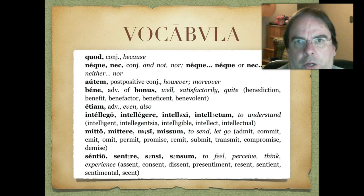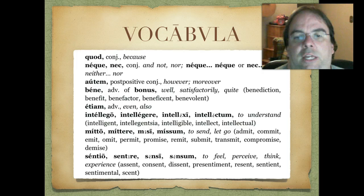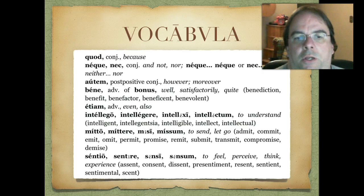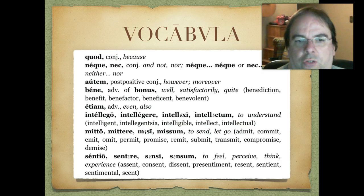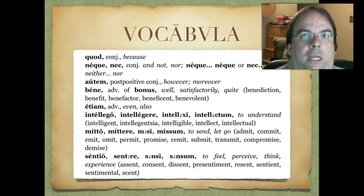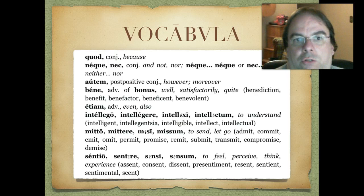Then we're going to get some verbs, just like always in these chapters. Here's a third conjugation verb — fortunately you can almost guess what it means — intellego, intelligere, intellexi, intellectum, which means to understand, where we get our word intelligent from. Next we have mitto, mittere, misi, missum, which means to send or to let go. Then we have a fourth conjugation verb: sentio, sentire, sensi, sensum — an easy one to memorize because it means to feel, to perceive, to think, to experience, to sense something. You can see we get a lot of our English words by way of French from Latin.